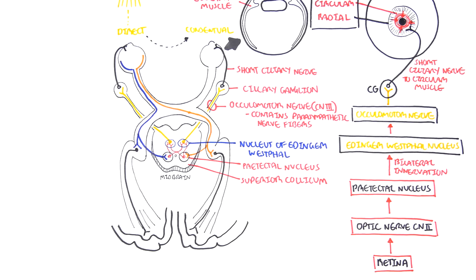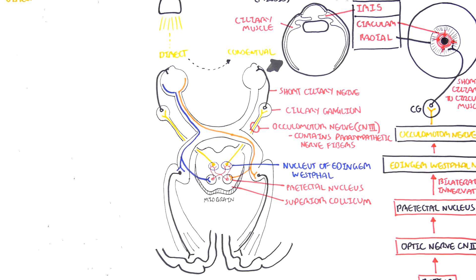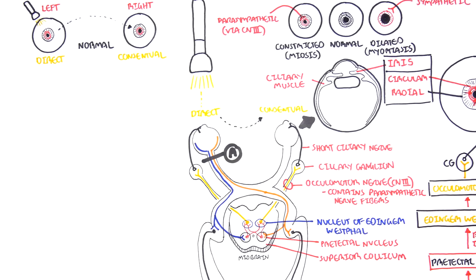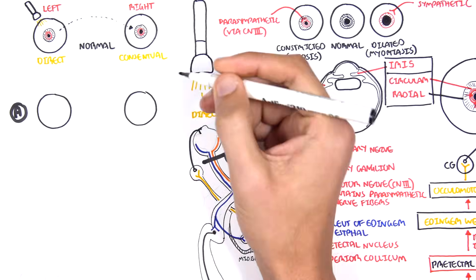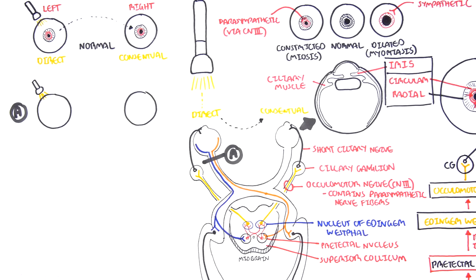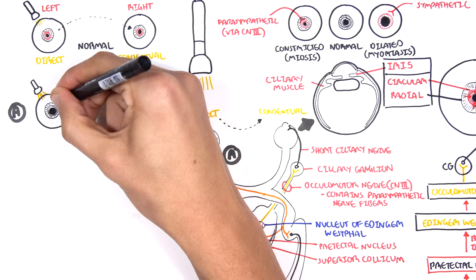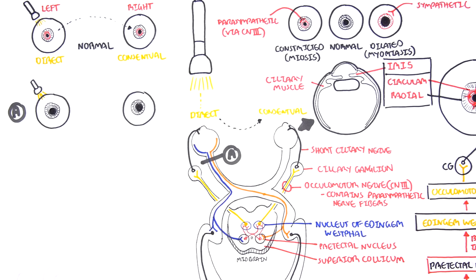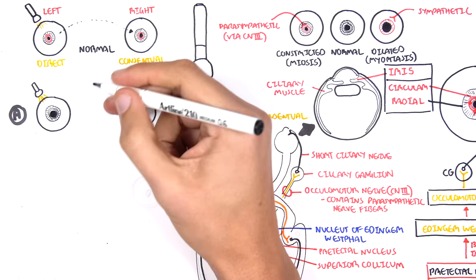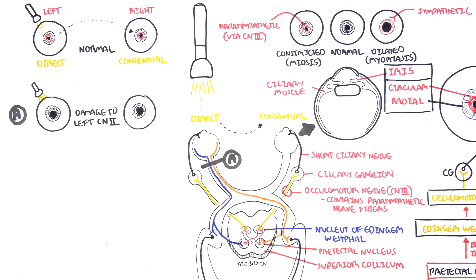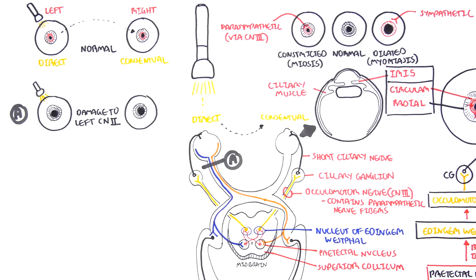Now let's see what happens when we have lesions along the light reflex pathway. If we have a lesion on the left optic nerve, when we shine a light on the left eye, no information is received, so we get no pupillary response on the left side. We also get no pupillary constriction on the right side — so neither the right nor left constricts. This is because damage to the left optic nerve, cranial nerve 2, means no information is sent to the midbrain, and thus the light reflex is absent.